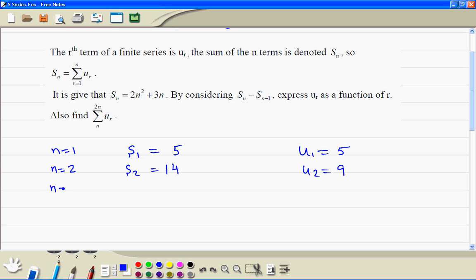Then we find the sum of the first three terms. So that's 9 times 2 plus 3 times 3, that's 27. So then the sum of the three terms minus the sum of the first two terms gives us the third term, which is 13.